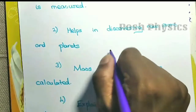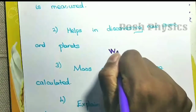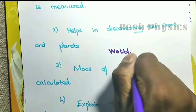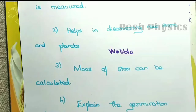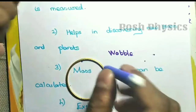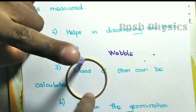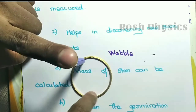Another important application is that we can find out wobbling motion. What type of motion? Wobble. I will draw a small sketch — a circular path — and mark the center point to explain this.